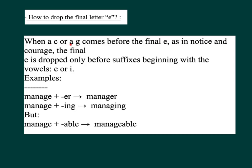When a C or G comes before the final E, as in 'encourage,' the final E is dropped only before suffixes beginning with the vowels E or I. Examples: manage + ER = M-A-N-A-G-E-R, manager; manage + ING = M-A-N-A-G-I-N-G, managing. But manage + ABLE = M-A-N-A-G-E-A-B-L-E, manageable — the E is kept before the vowel A.